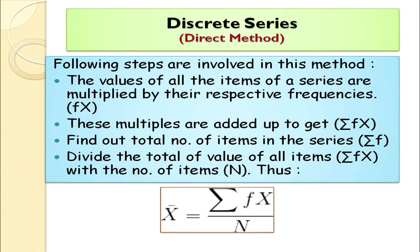Once we have multiplied to get the fx column, we add them all up to get summation of fx. In discrete series, the total number of observations n equals the sum of frequencies. The formula is: mean equals sum of fx divided by n, where n stands for sum of frequencies. Let's take an example to see how we calculate it.